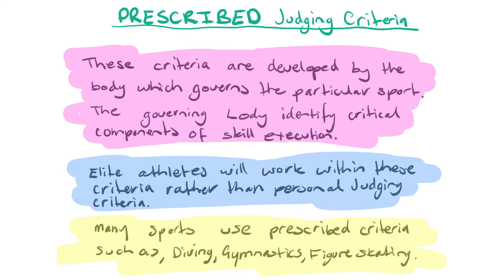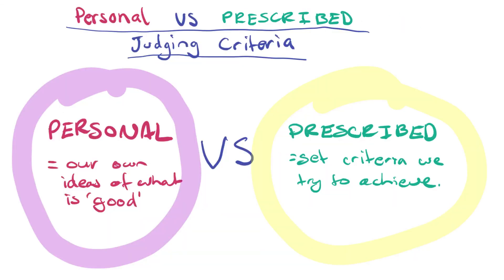In summary: personal judging criteria represent our own ideas of what looks good — a coach uses these most at the cognitive and associative stages of skill to increase motivation and pinpoint important elements of a skill. Prescribed judging criteria are set criteria established by a governing body, and an athlete will develop their performance around these criteria to achieve a good result when judged during performance.